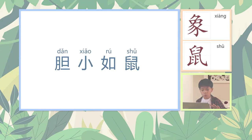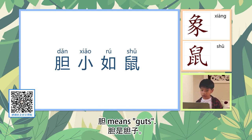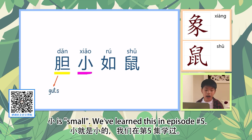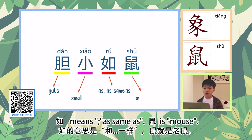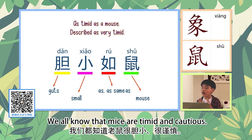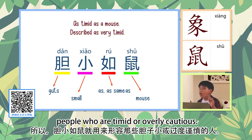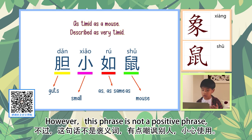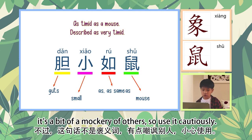One more: 胆小如鼠. We all know that mice are timid and cautious, so 胆小如鼠 is used to describe people who are timid or overly cautious. However, this phrase is not positive — it's a bit of a mockery of others, so use it cautiously.